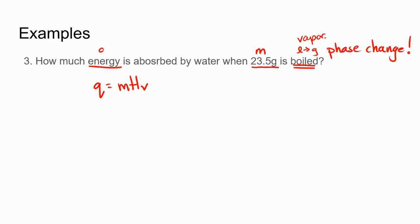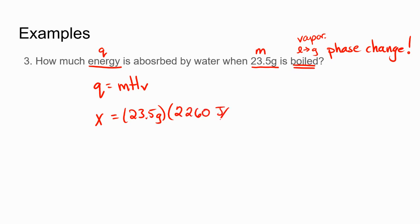How much energy? So Q is our x. We have a mass of 23.5 grams, and from page one of the reference tables the heat of vaporization is 2260 joules per gram. All we have to do is multiply those together. Because the mass has three significant figures, we want our answer to three significant figures.